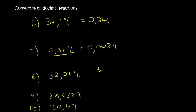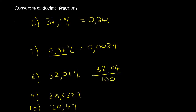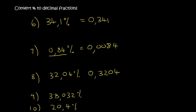32.04%: that's going to be 32.04 over 100. You then move your decimal place two places, and so you end up with comma 3204. Because it looks empty in the front, you add a 0.